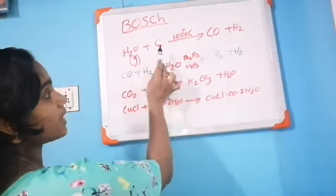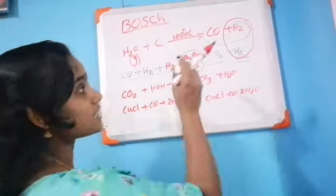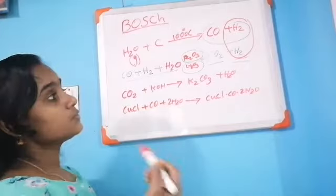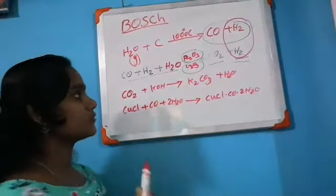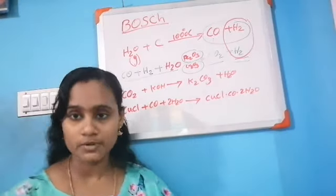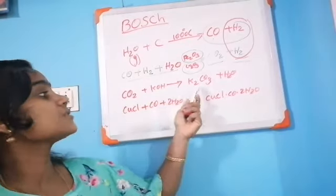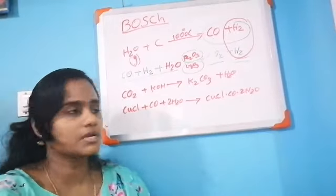Now we need to separate the hydrogen from carbon monoxide and carbon dioxide. Some carbon monoxide is converted to carbon dioxide, but some carbon monoxide still remains. To remove carbon dioxide, we pass the mixture through caustic potash — that is potassium hydroxide — and we get potassium carbonate and water. The potassium carbonate settles down and can be separated.